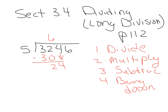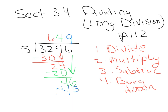We're going to divide. 5 goes into 24, 4 times. Then we're going to multiply: 4 times 5 is 20, and we write that underneath. Then we're going to subtract, and then we're going to bring down and do it all again. 5 goes into 46, 9 times. 9 times 5 is 45. And when we subtract, we end with 1.